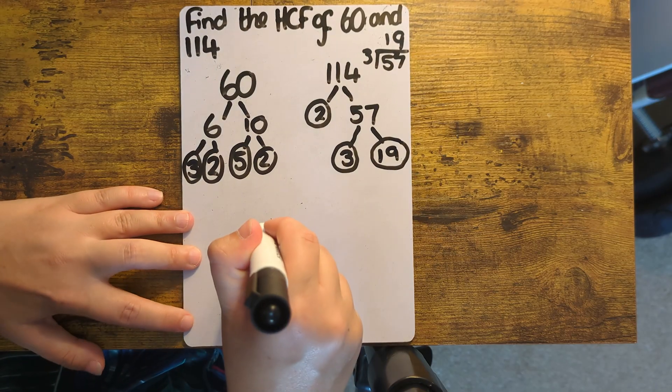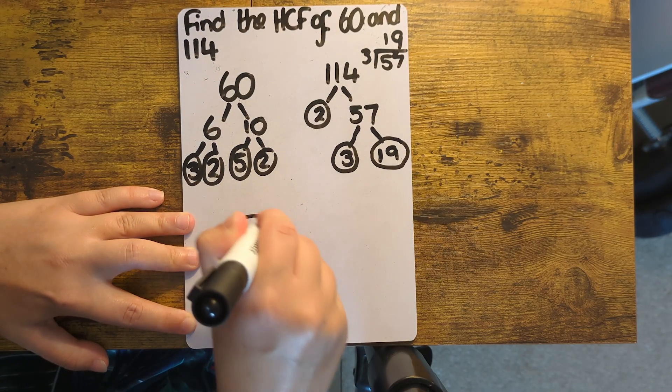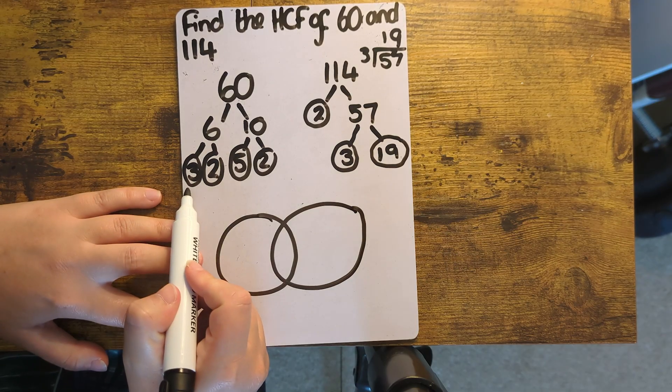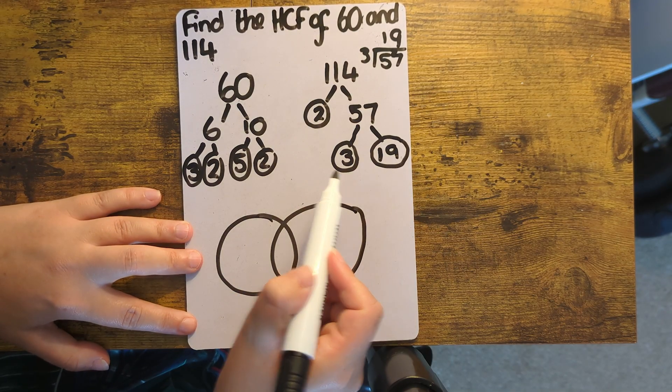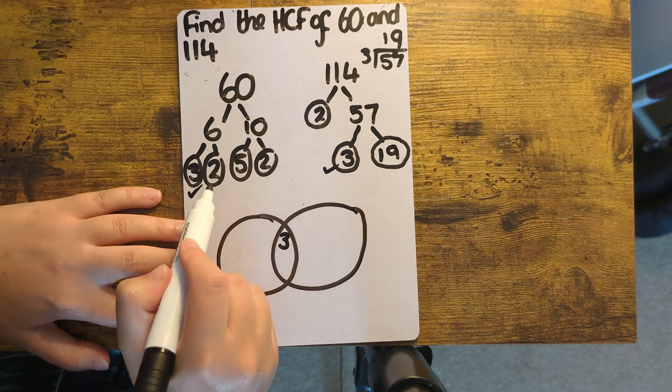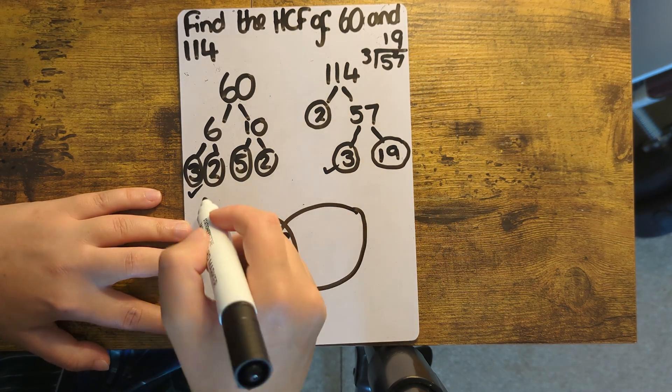So once again, I'm drawing my 2 circles, and I'm going to start pairing off the numbers. This 3 can be paired with this one, so it goes in the middle. This 2 can go in the middle as well because it can be paired with that one.